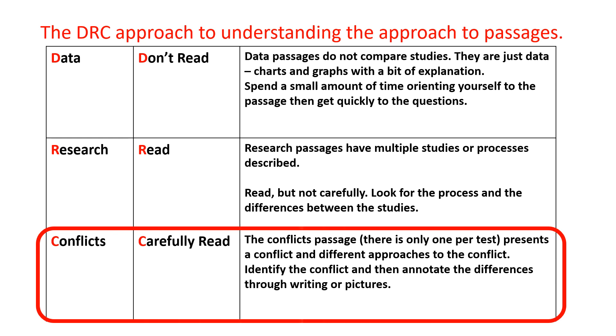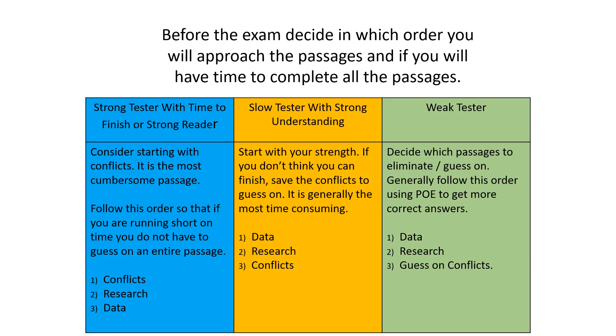For the DRC approach, C stands for conflicts, and that's carefully read. I find for most students, it's better if they spend more time in the passage than the questions are easier. There's only one conflicts passage per test, and you treat it like a reading passage. Your goal is not to answer every question, but to maximize correct answers. For some students, if you are a weaker reader or a weaker test taker that doesn't have time to finish, you might want to skip the conflicts passage altogether. Use your time on the other passages.